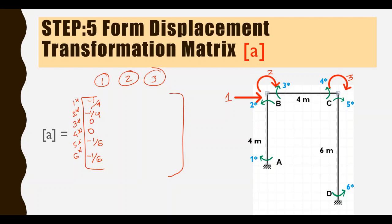Coming to the second system coordinate, I am applying a unit rotation at B. Since this is a unit rotation at B, the member deformation at one star is zero. Two star and three star are at B, so they have unit rotation value of 1. Four star is zero, five star zero, and six star zero. For the third system coordinate, applying a unit rotation at C: the member deformations at one star, two star, and three star are all zero. At four star the value is 1, at five star the value is 1, and at six star it is zero.